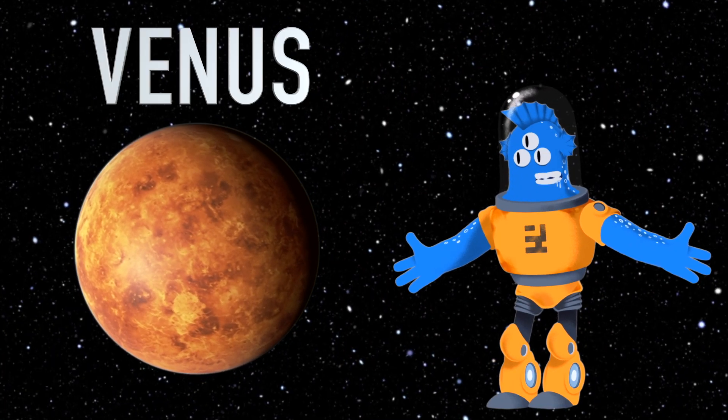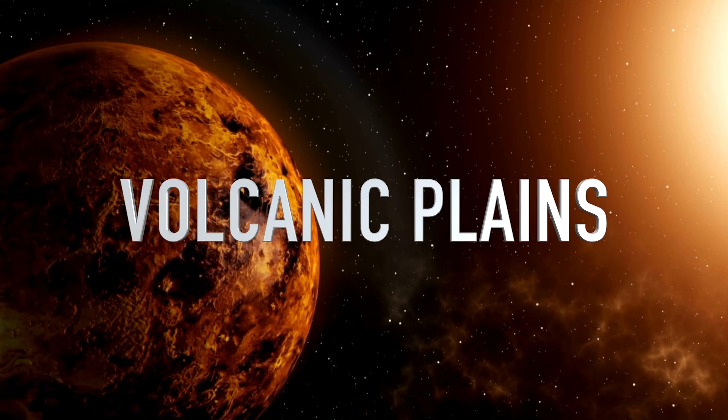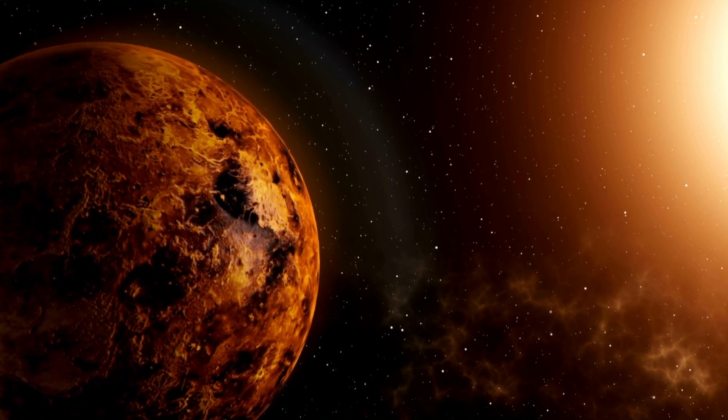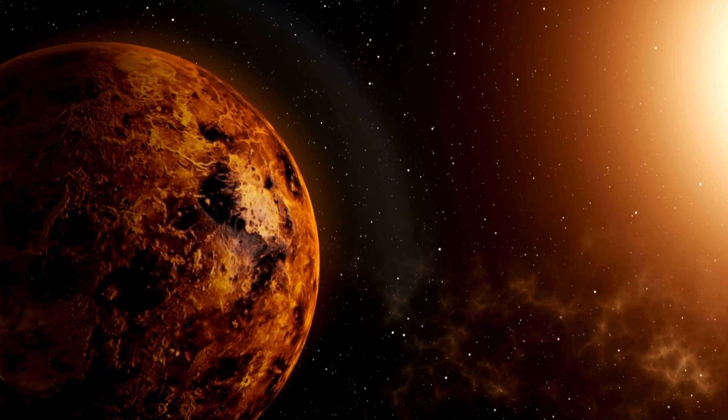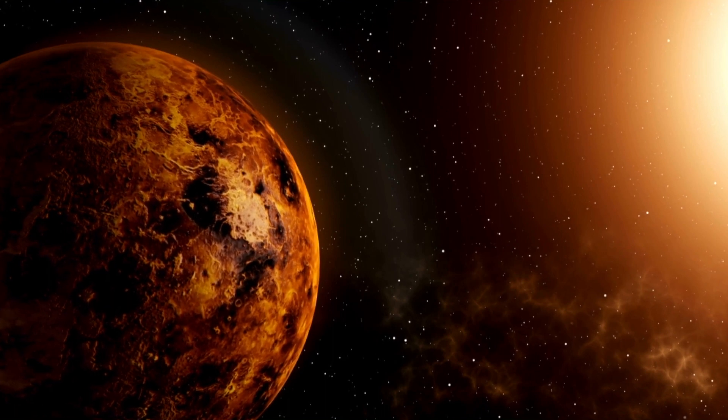Venus is home to something called volcanic plains. It's like a land of volcanoes. These volcanoes may not be erupting now, but they tell us that Venus was once a fiery volcanic world.